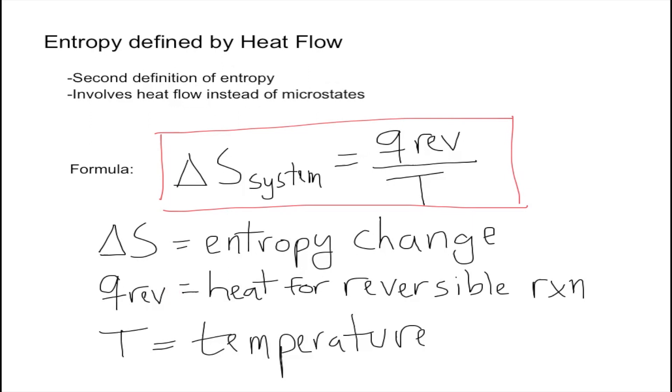The units for entropy ΔS are joules over Kelvin. As you can see from the formula, the heat is in joules and the temperature is in Kelvin, which gives you these units.